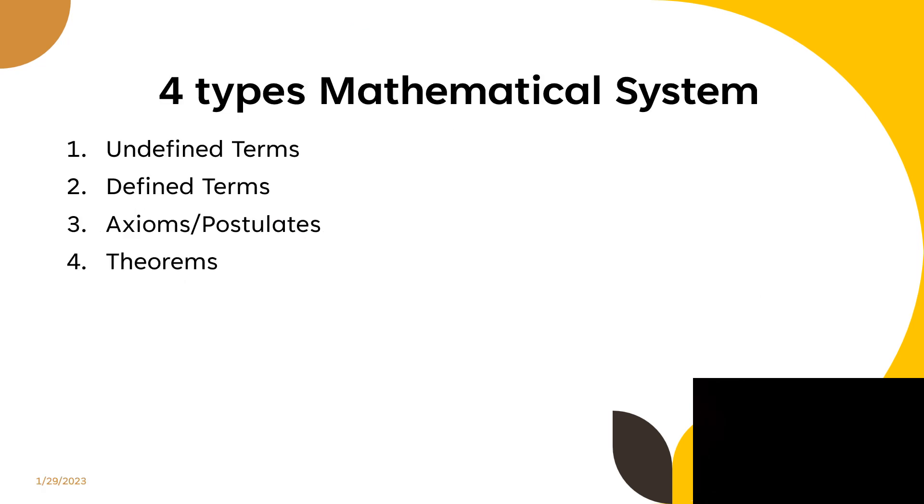We have four types of mathematical systems: the undefined terms, the defined terms, the axioms or postulates, and theorems.